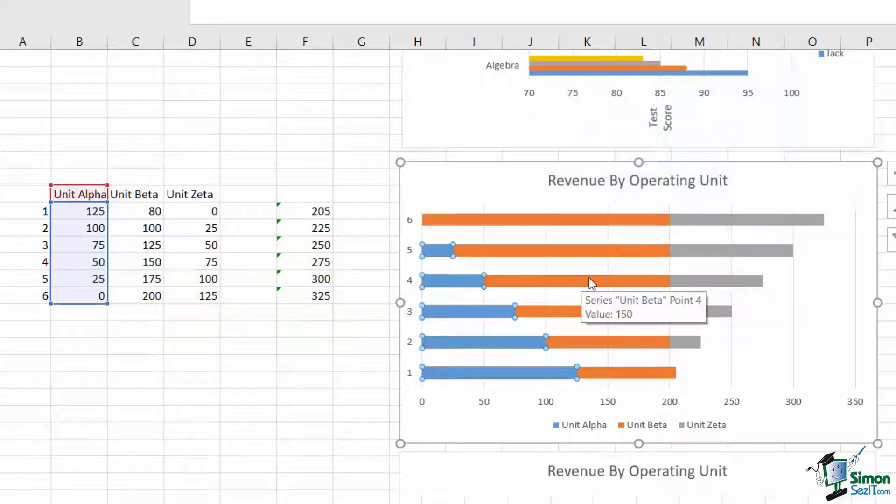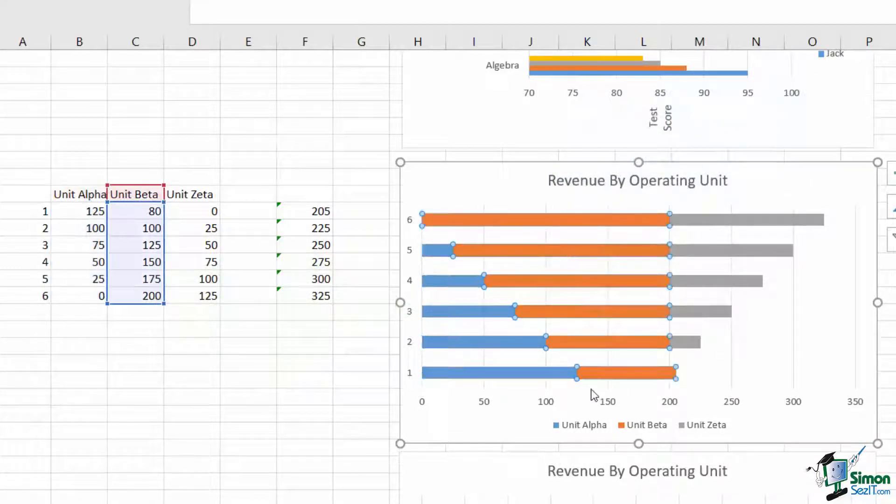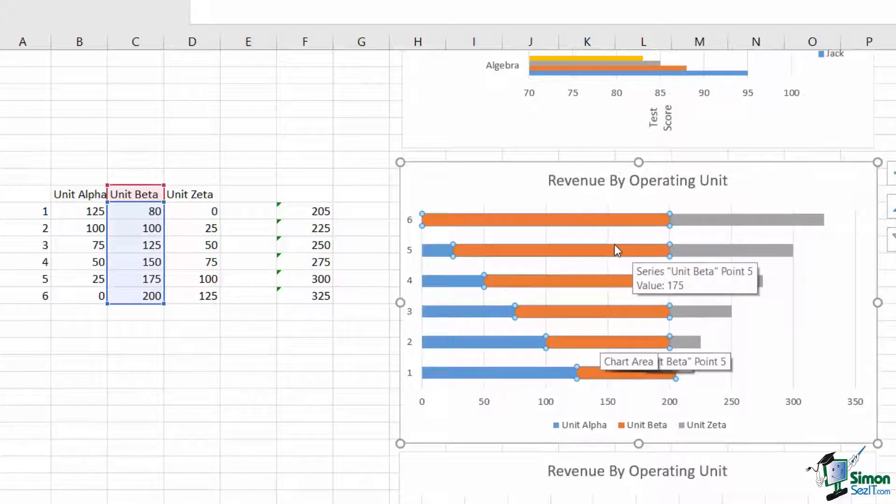In this example, you can see that unit beta has varied somewhat, increasing its component over time, while alpha and zeta have basically replaced each other, resulting in somewhat steadily increasing revenues.